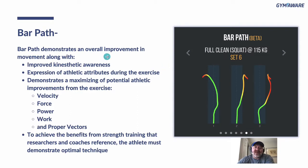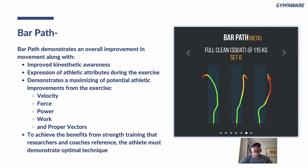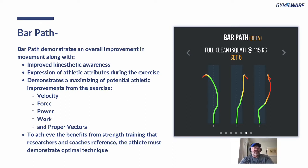Bar path is my favorite. You can actually see changes in velocity and changes in bar path together. If the bar falls forward off the floor, it's not going to be as fast — sometimes people say it just feels heavy today, and it's because they're doing it wrong. This allows you to quantify that. Bar path demonstrates overall improvement in movement, like improved kinesthetic awareness — knowing where you're at in space. It reflects expression of athletic attributes during the exercise and demonstrates maximizing potential athletic improvements: velocity, force, power, and work only happen if you do it correctly, and bar path quantifies that. Consider whether you want vertical or horizontal force production — to achieve the benefits researchers and coaches reference, the athlete must demonstrate optimal technique.